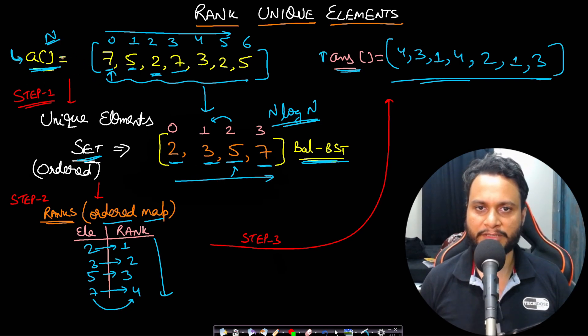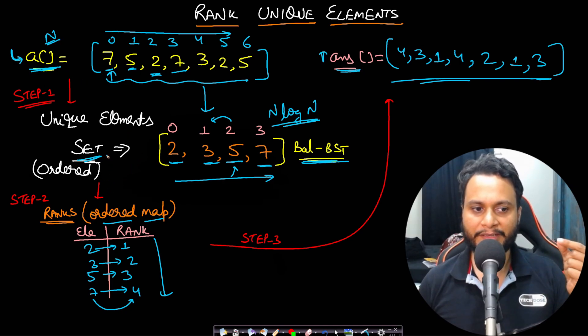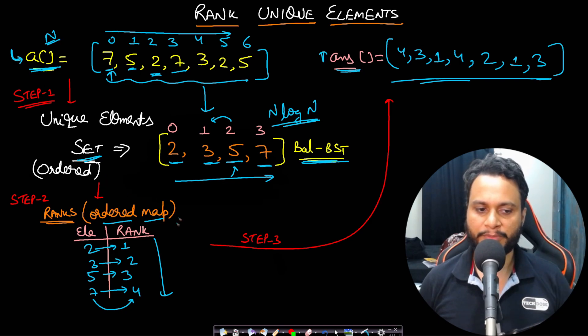In the worst case, all our items can be unique. So the set size will be the same as the input array size. And in that case, since you are entering all the items of the set into an ordered map, this is also a balanced BST. So this will also take a log N time for each operation. And since you are doing N operations in the worst case, this step is also N log N.